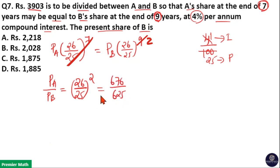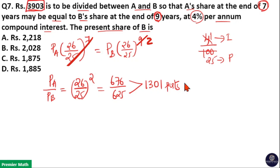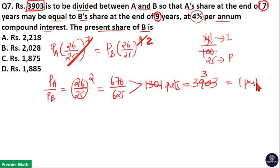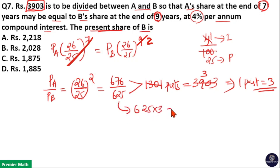In ratio, Principle of A + Principle of B = 676 + 625 = 1301 parts. The total amount given is 3,903, so 1301 parts = 3,903, meaning 1 part = 3. The present share of B is 625 parts, so 625 × 3 = 1875. The present share of B is Rs. 1875. Option C is your answer.